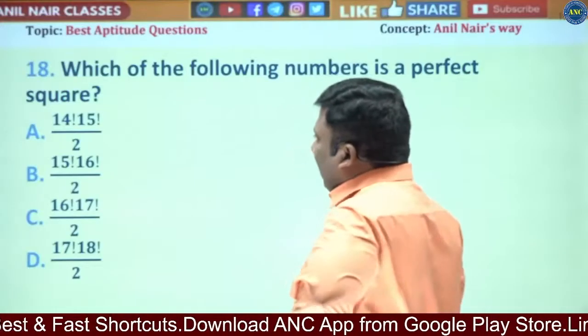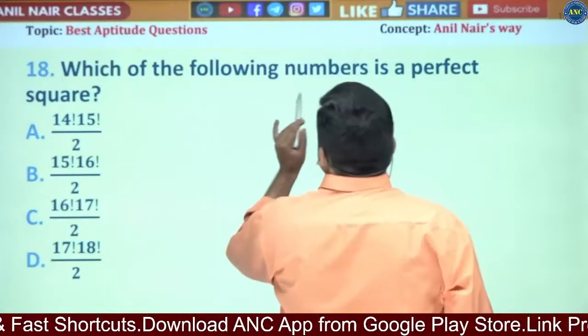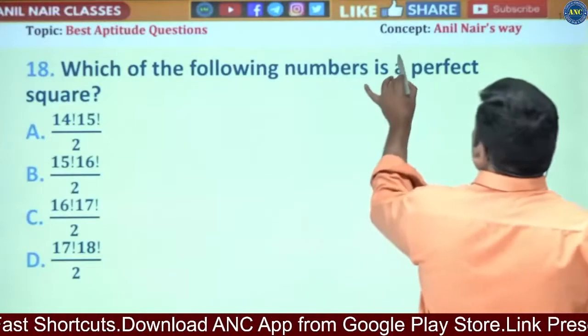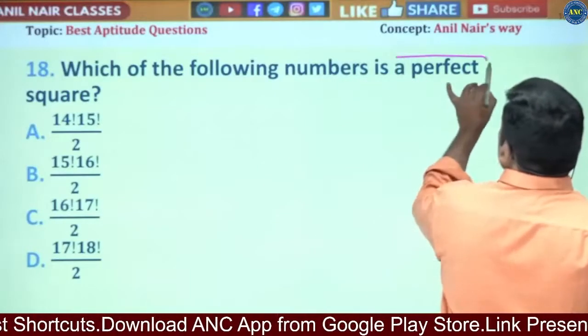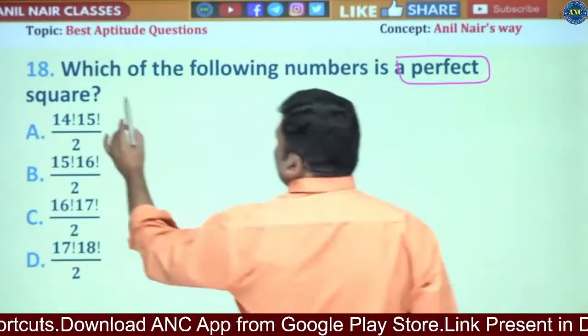We have 18 factorial divided by 2. First thing — what is the keyword in this question? Which of the following is a perfect square?